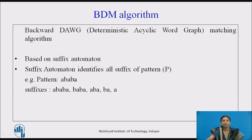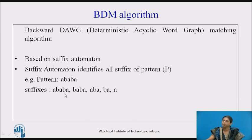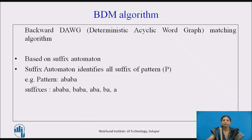Consider the example here. The string is ABABA. There are 5 characters, so we get 5 suffixes. The string itself is the longest suffix: ABABA, then BABA, ABA, BA, and A. So we need to find the automata which will accept all these suffixes.